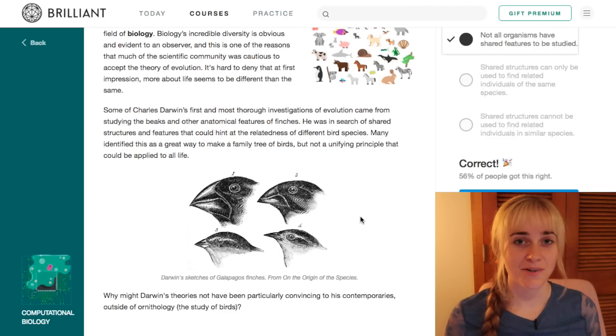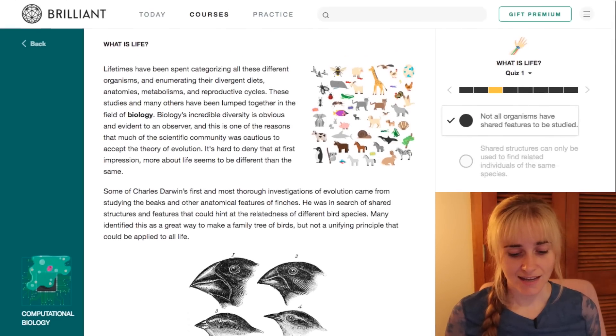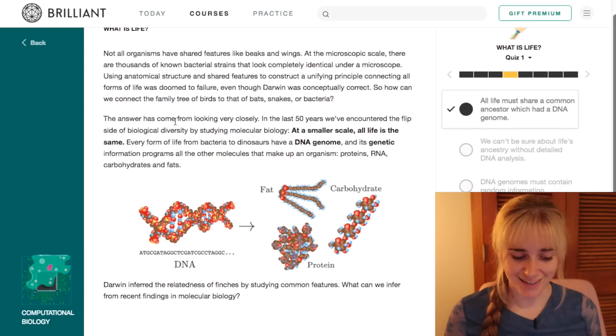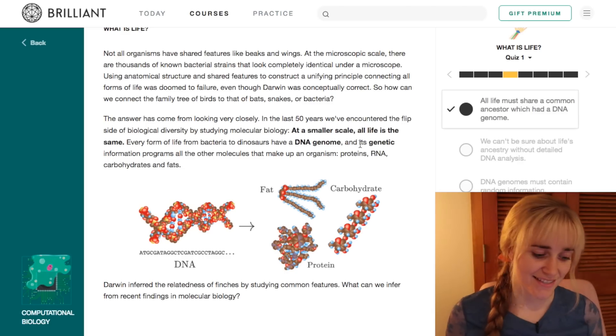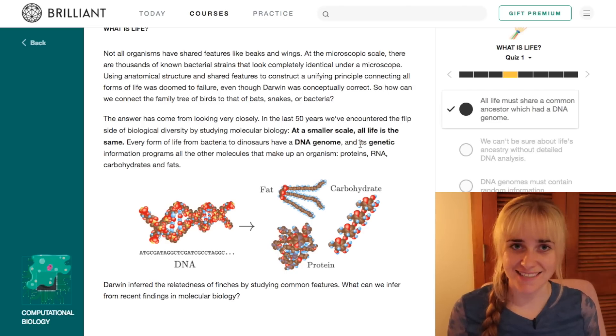Some of Darwin's theories were not necessarily convincing because looking for shared features like this is not something that you can do with all organisms. However, if you get closer, and I'm talking to the small scale of DNA and molecules, we do see a similarity between all life forms, and that's that all life from bacteria to dinosaurs have a DNA genome and uses this genetic information to program the cells to do things like make proteins, RNA, everything else that makes up the organism.